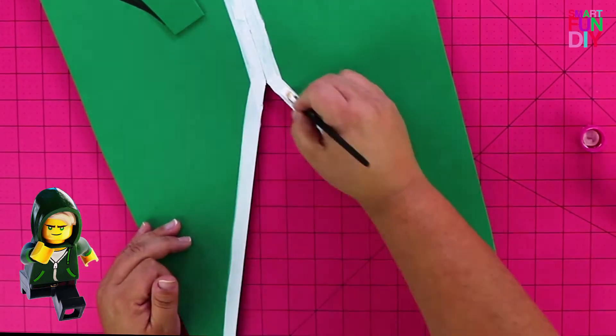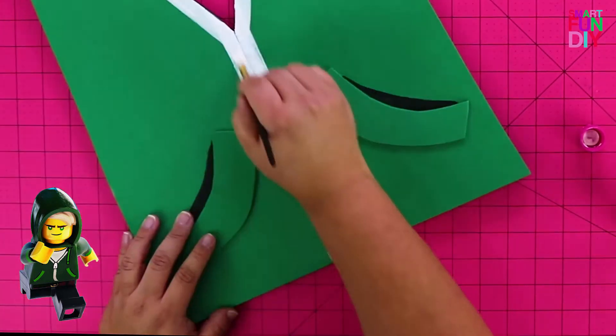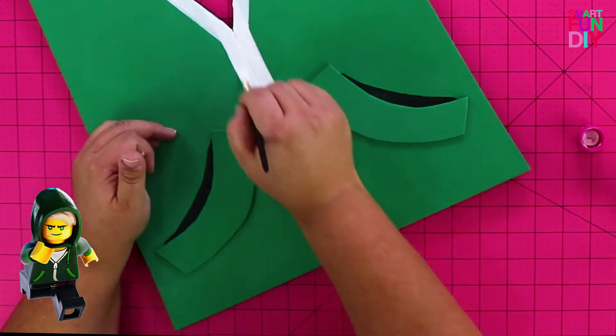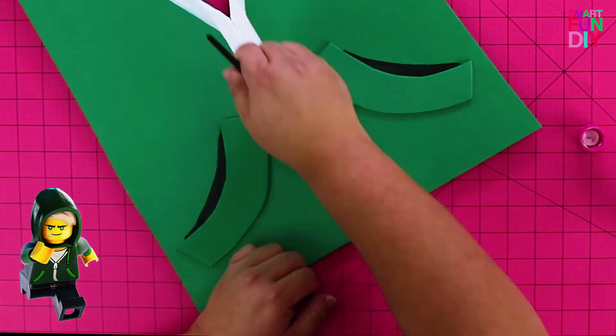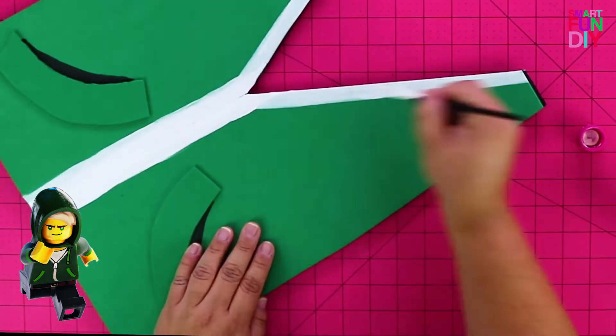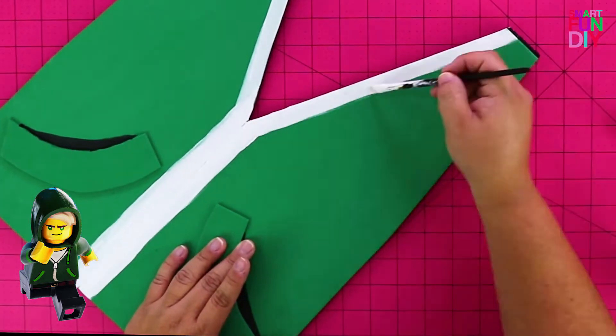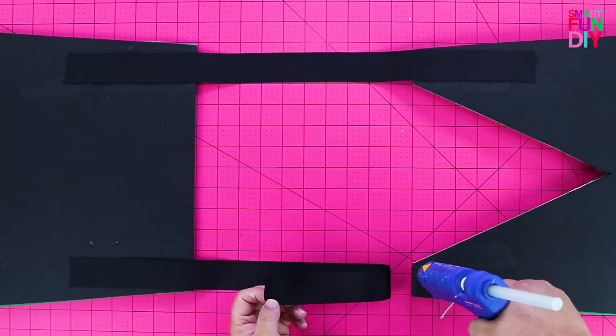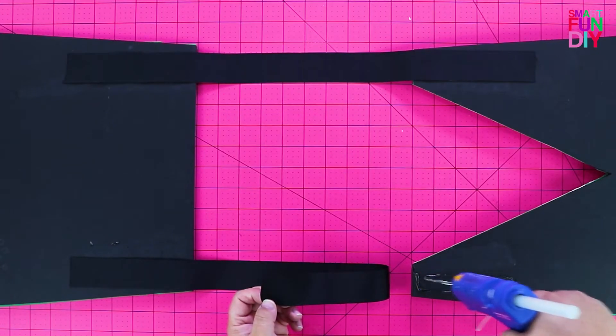You can just refer to what the Lego Ninjago characters look like in order to paint your own custom features onto your costume. If you wanted to make this for any of the other characters, just change the colors and change the details you're putting on there.